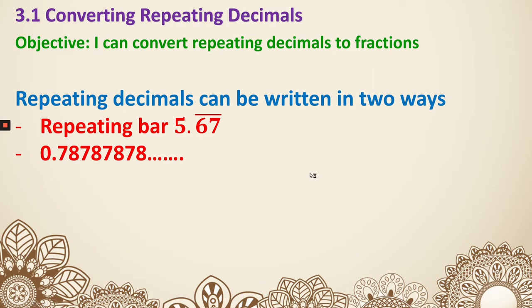There are two different ways to write repeating decimals. The first way is we use a repeating bar. So whichever digit is repeating, we put a bar on top of it. For example, 5.67 bar means 5.6767676767, so 6 and 7 since they are under the bar, that's repeating.